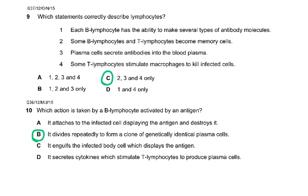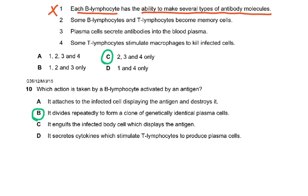Each B lymphocyte has the ability to make several types of antibody molecules — that's wrong. One lymphocyte only makes one type of antibody molecule, but it is specific to one antigen. Question ten: which action is taken by a lymphocyte activated by an antigen? It divides repeatedly to form a clone of genetically identical plasma cells, and then some become plasma cells and some become memory cells.